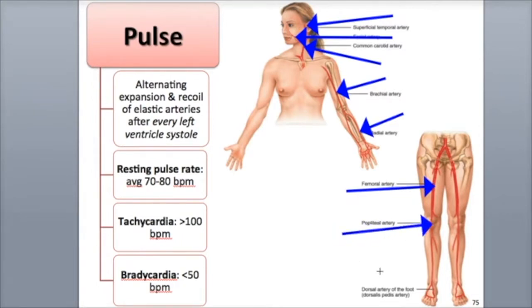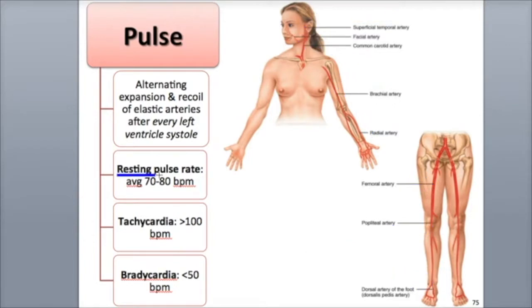The dorsalis pedis artery of the foot is another pulse point. The resting pulse rate is usually similar to the resting heart rate, an average of around 70 to 80 beats per minute. A rapid resting heart rate or pulse rate exceeding 100 beats per minute is called tachycardia.